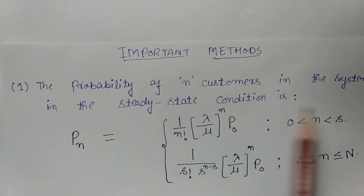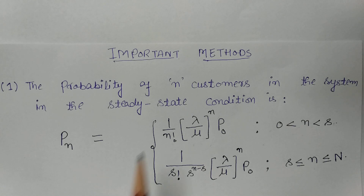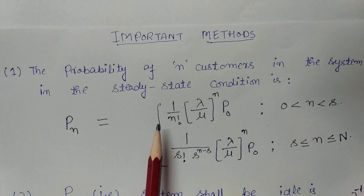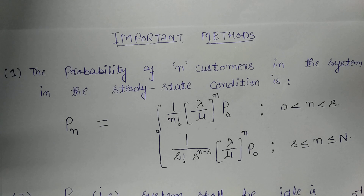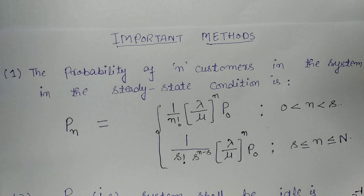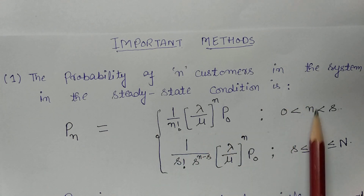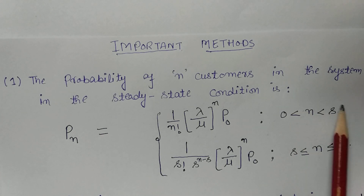The probability of N customers in the system in the steady state condition: from video number 7 on queueing theory, the steady state equation when there are N customers is P_N = (1/N!) × (λ/μ)^N × P_0, where λ is the average number of arrivals per unit time and μ is the average number of customers served per unit time. This holds when 1 ≤ N < S, where S is the number of servers.